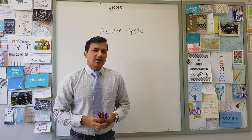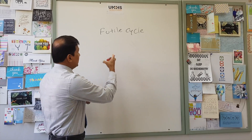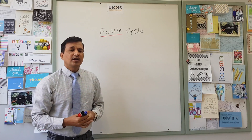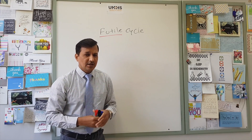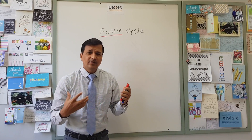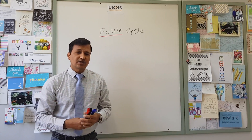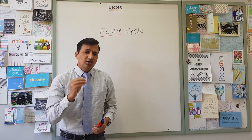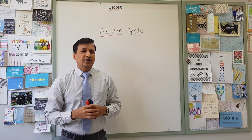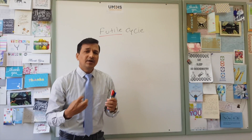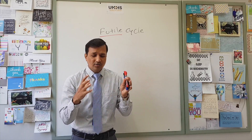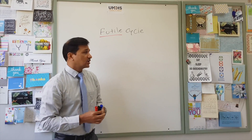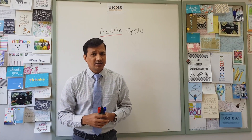The futile cycle, as the name says, so futile here means nothing comes out of this — no significant metabolic output. That is what is the futile cycle. Whenever opposing metabolic pathways are going on simultaneously, no significant metabolic product is coming out. That kind of pathway is referred to as a futile cycle or futile pathway.